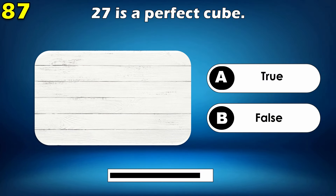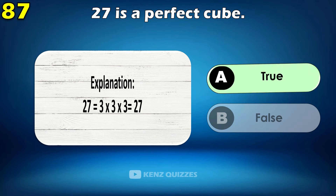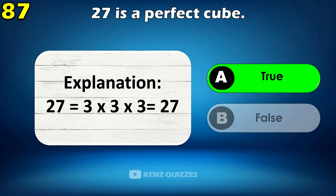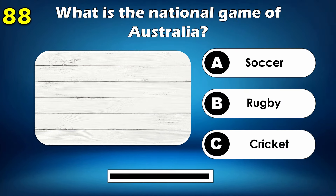27 is a perfect cube — is it true or false? Yes, it is true. What is the national game of Australia? Cricket.